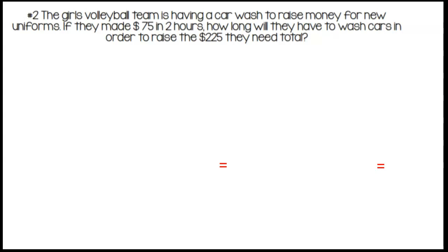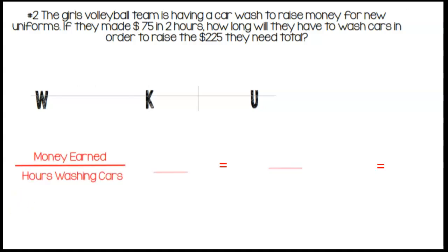The girls volleyball team is having a car wash to raise money for new uniforms. If they made seventy-five dollars in two hours, how long would they have to wash cars in order to raise the two hundred twenty-five dollars they need total? Pause the video and create the WKU proportion and solve. Alrighty, our word ratio is money earned over hours washing cars. Our known ratio is seventy-five dollars over two hours. We also know that we need two hundred twenty-five dollars over H, which stands for hours.